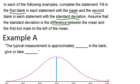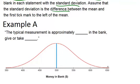So let's look at some examples. Example A, the typical measurement is approximately blank in the bank, give or take something.